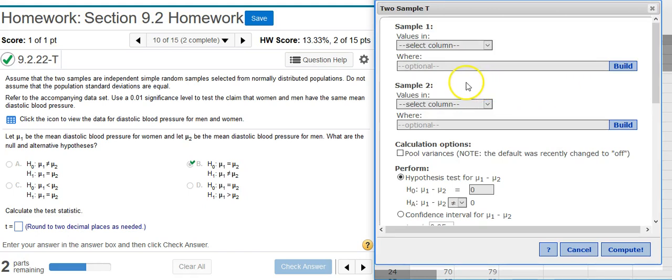Here in the options window, I need to select the columns where my data is located. Which goes in sample 1, and which goes in sample 2? Well, usually, you follow the clue from the problem statement itself. Here, the women are mentioned first, and the men are mentioned second. And so, that's the order we're going to put them in here, in StatCrunch. The women go first, and then the men go second. Make sure this box for pooled variances is not checked. It used to be that the default was to check this box, and then they changed the coding in StatCrunch so that the default is now unchecked. That's what we want. Leave that box unchecked.